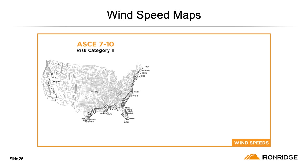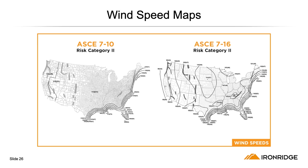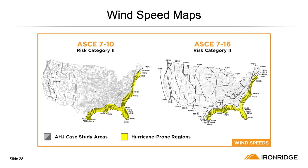Let's compare the wind speed maps. On 710, most states had the same wind speed with a lot of lines near the coastal southeast. On the 716 map, wind speeds were actually reduced for the most part. But the hurricane-prone regions in yellow remained the same — there was no reduction in wind speeds there. The gray shaded areas on the map represent case study areas by local jurisdictions, where wind speeds can fluctuate a lot because of geographical features and elevation. It's always important to check with your AHJ to find out the actual wind speeds in those areas.